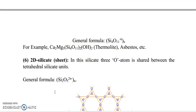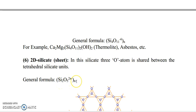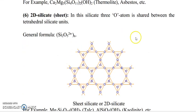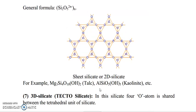Next type is 2D silicate, also known as sheet silicate or phyllosilicate. In this silicate, 3 oxygen atoms are shared between the tetrahedral silicate units. The general formula for 2D silicate is Si₂O₅²⁻ N. For example, Mg₃Si₄O₁₀(OH)₂ is known as talc, and Al₂Si₂O₅(OH)₄ is known as kaolinite.